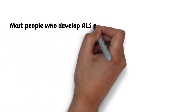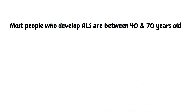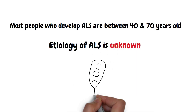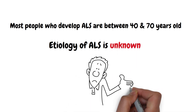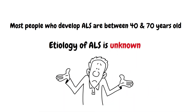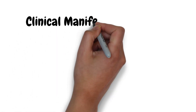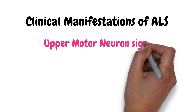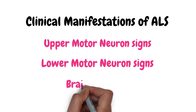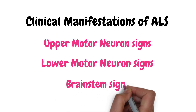Most people who develop ALS are between 40 and 70 years of age, with an average age of 55 at the time of diagnosis. The etiology of ALS is unknown, but a subset of cases appears to be inherited. ALS can present with a mixture of upper motor neuron, lower motor neuron, and brain stem findings.